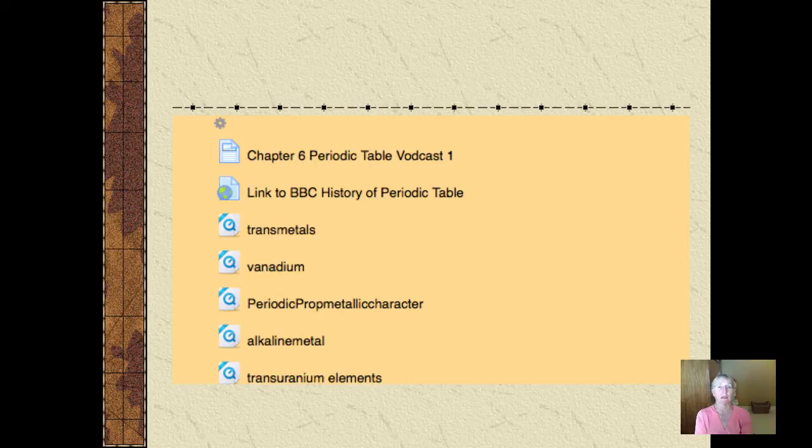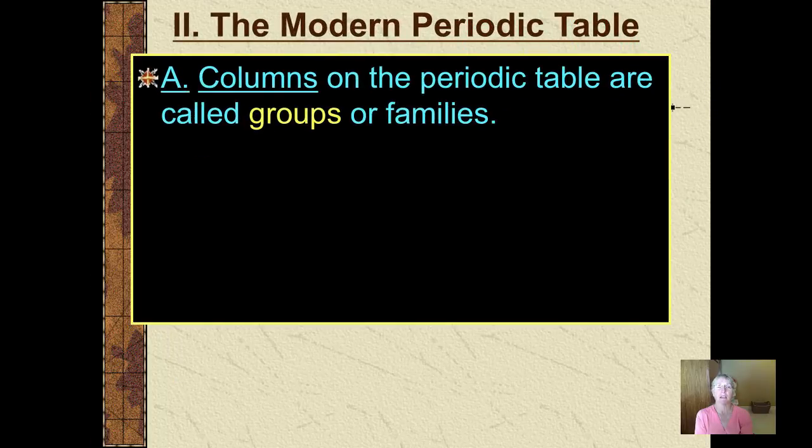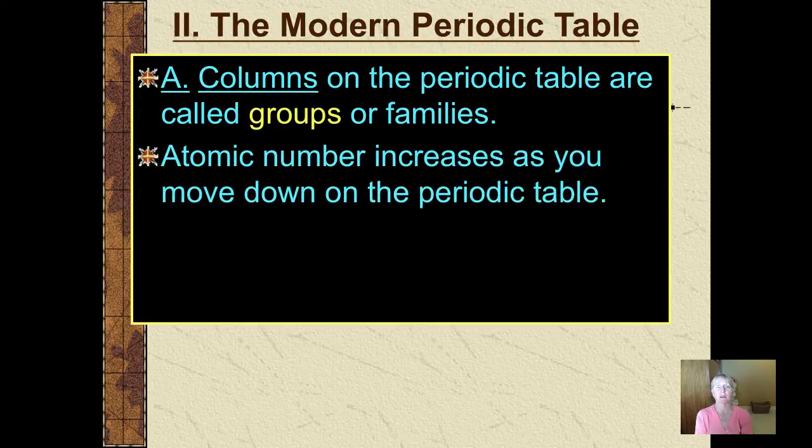Please, if you'd like to wait until the end of the vodcast, feel free, but please do see these. They take 30 seconds to a minute each, and they add a lot of information that I wasn't able to incorporate into this vodcast. Okay, so on our modern periodic table, we have vertical columns, which are also called groups or families.